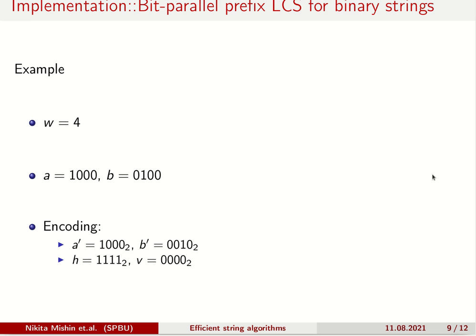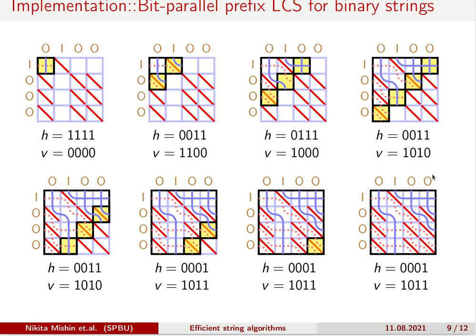Consider an example. Let machine word and string length be of size 4. First we encode both strings, then we process all anti-diagonals. Here you can see visualization of processing of each anti-diagonal. Let's check how we process the second anti-diagonal.